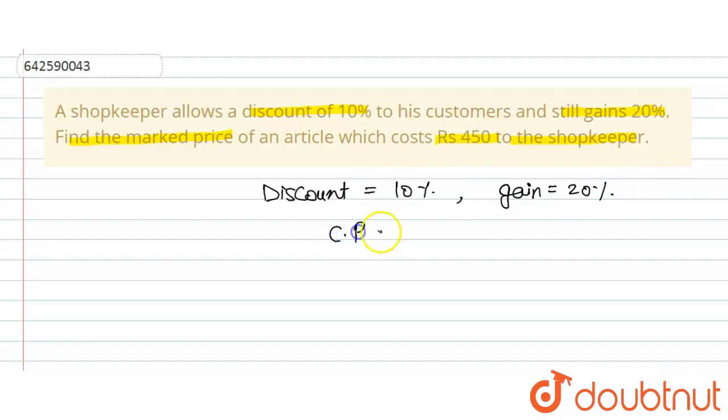And cost rupees 450 to the shopkeeper, so that means this is the CP, cost price, rupees 450.